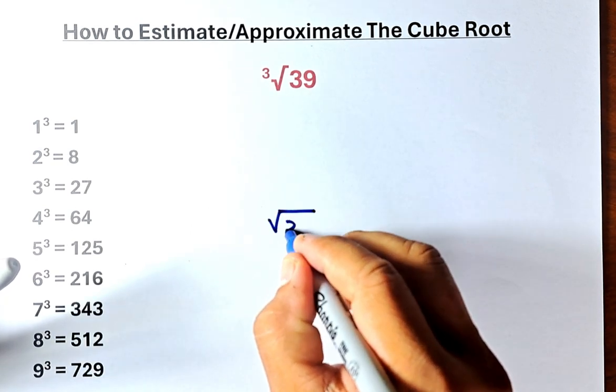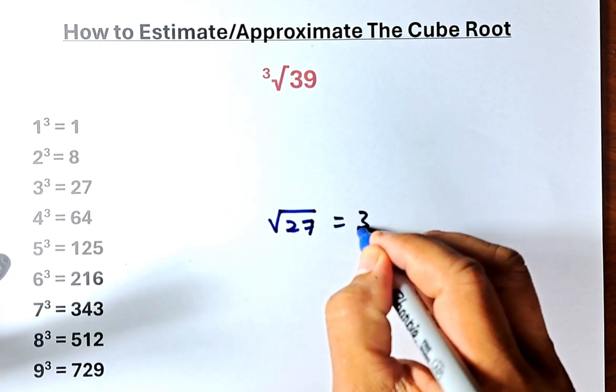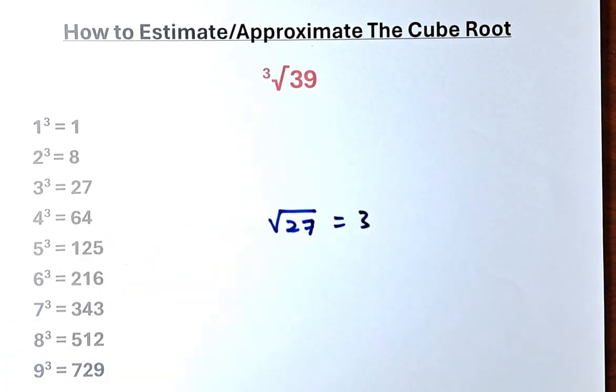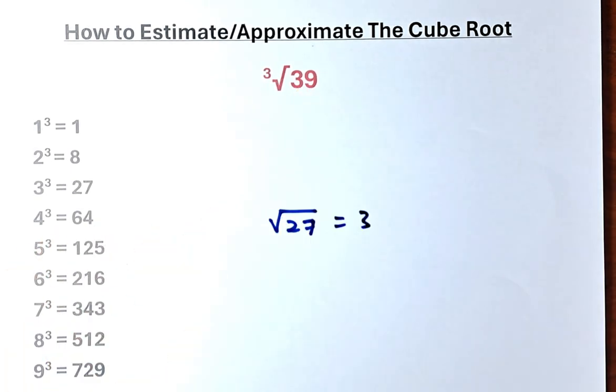Cube root of 27 equals to 3 because if it's more than 3, which is 4 cubed is 64, it exceeds 39. So we are going to stop at 3.